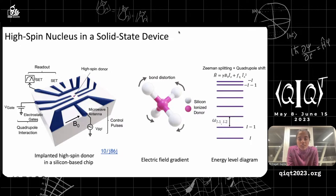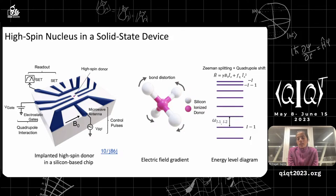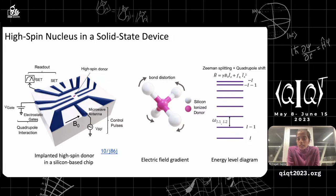The short DOI 10/J86J refers to the Nature paper by Andrea Morello's group, which demonstrated control of the antimony nucleus in a silicon-based chip — finding all eight energy levels and manipulating them using both magnetic and electric pulses.